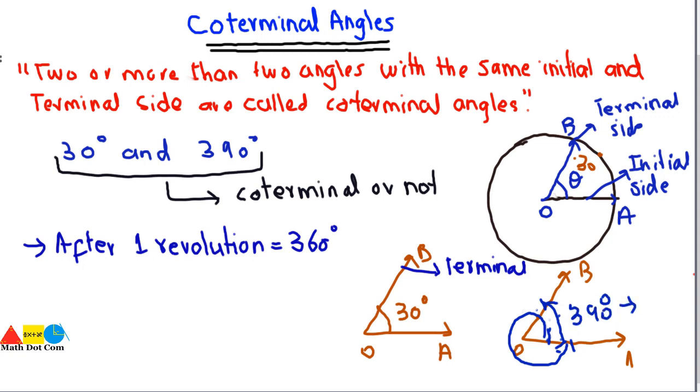So here it comes 390 degrees. How? By 30 degrees plus 360 degrees. It means it has made one complete revolution and it comes back to the terminal side of angle 30. So if the second angle comes back to the terminal side of the first angle, it means both the angles are coterminal. So after one revolution, the angle is coterminal.